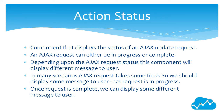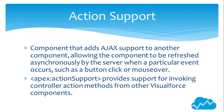Action status is a component that displays the status of an AJAX update request. An AJAX request can either be in progress or complete. Depending upon the AJAX request status, this component will display different messages to the user. In many scenarios AJAX requests take some time, so we should display a message to the user that the request is in progress. Once the request is complete, we can display a different message to the user.